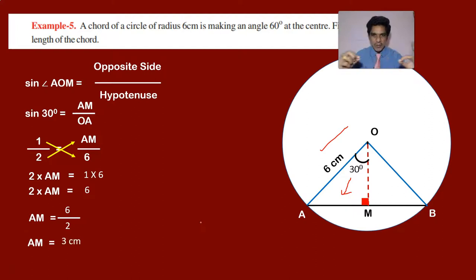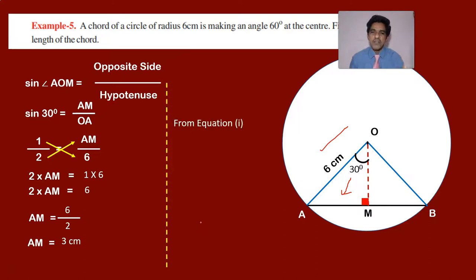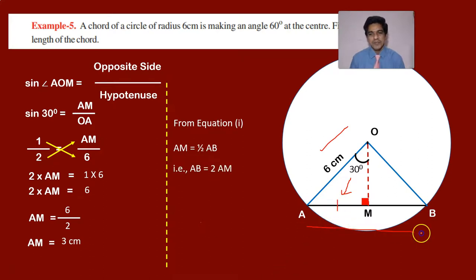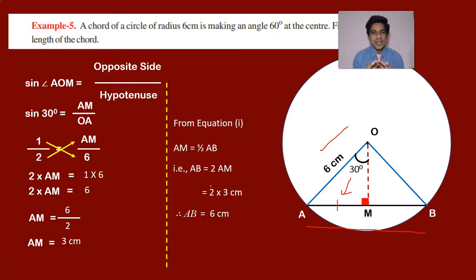Since AM is half of AB, to get AB we double AM. From equation 1, AM equals half of AB, so AB equals 2 into 3 centimeters. Therefore AB is 6 centimeters. That is how, given the radius and the angle the chord makes at the center, we can find the length of the chord.